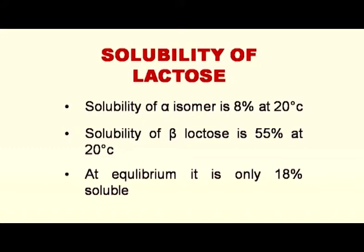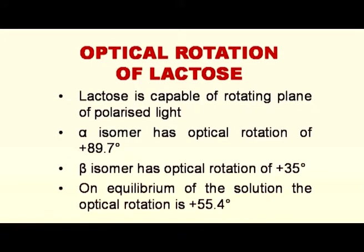The optical rotation of lactose: lactose is capable of rotating the plane of polarized light, and this property is known as optical rotation. Alpha lactose has an optical rotation of plus 89.7 degrees — it rotates the plane of polarized light in the clockwise direction. Beta isomer has a lower optical rotation of plus 35 degrees. On equilibrium of the solution, the optical rotation is plus 55.4 degrees.